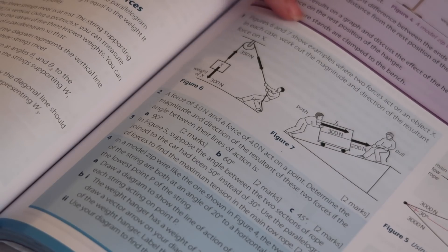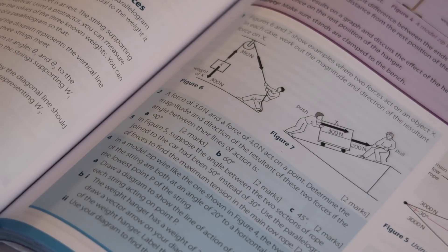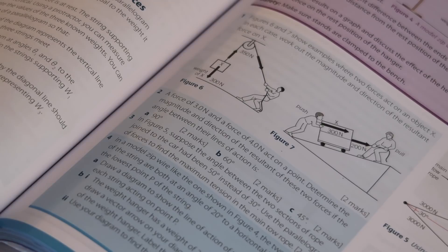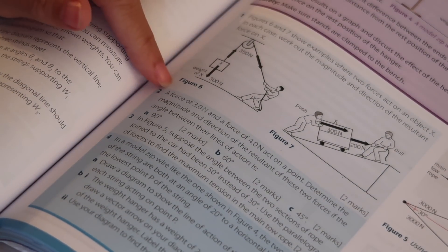Figures 6 and 7 show examples where two forces act on an object X. In each case work out the magnitude and direction of the resultant force on X. Don't go straight into drawing a parallelogram of forces because you've learned that and therefore you're determined to use it. Sometimes you won't need to use it and it won't make sense. Just look at the figure closely to work out what's going on.